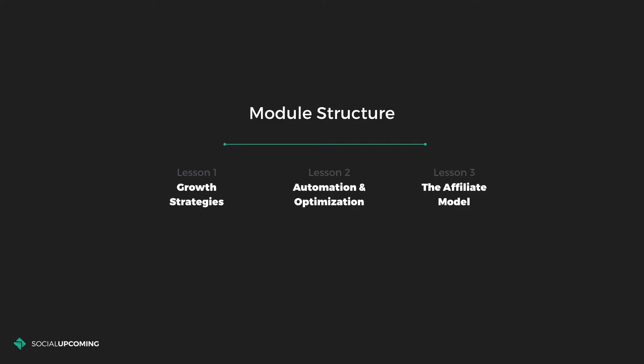Lesson number one is about growth strategies and involves different strategies you can use to expand your products, go into new markets, get more customers, and basically grow. Lesson number two is about automation and optimization — how you can automate and optimize your business to increase revenue, lower your costs, and do it all automatically.